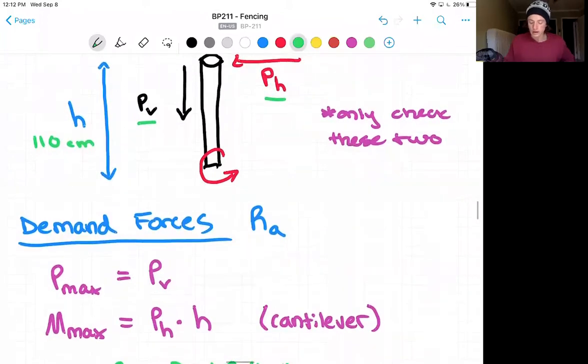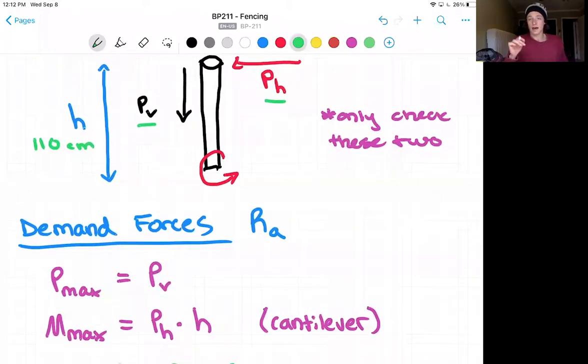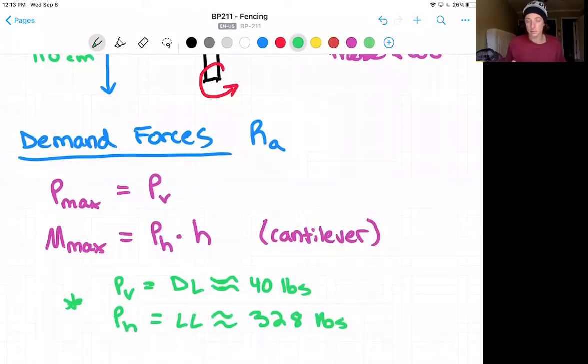Like I said, our demand forces with that A subscript are going to be our maximum axial force is just going to be that vertical force. And our maximum moment, we're going to assume, is applied at the full length of H, because this is a cantilever beam. And as we determined in the previous lecture...